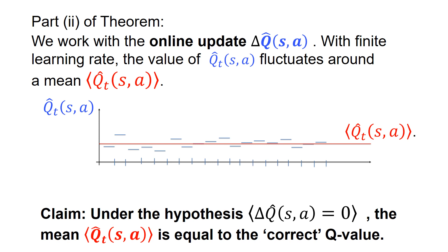Now part two of the theorem is very different. Here we work with an online update rule as before. We use finite learning rate. And the claim now is this Q hat fluctuates around the mean, a temporal mean, which is this red expression here.